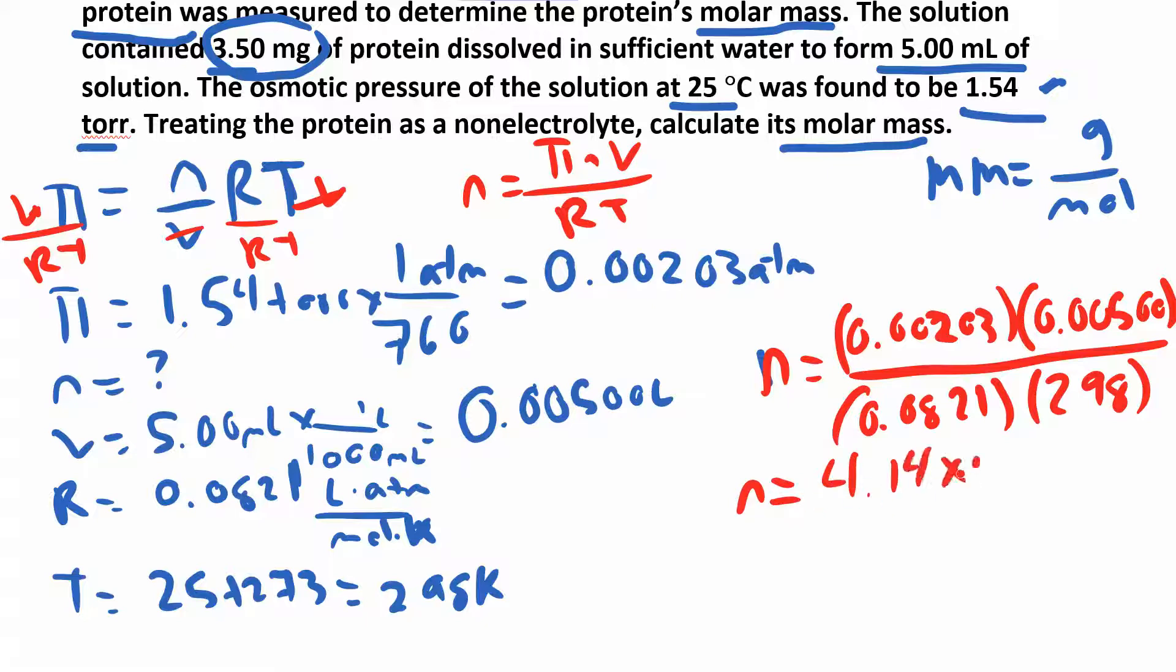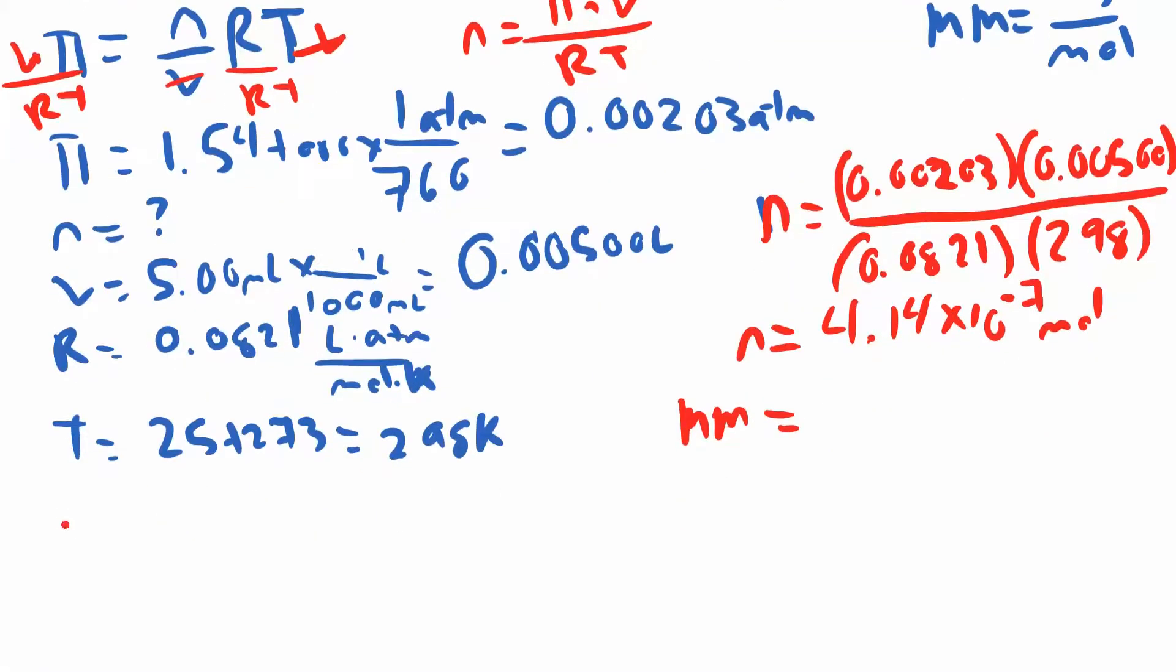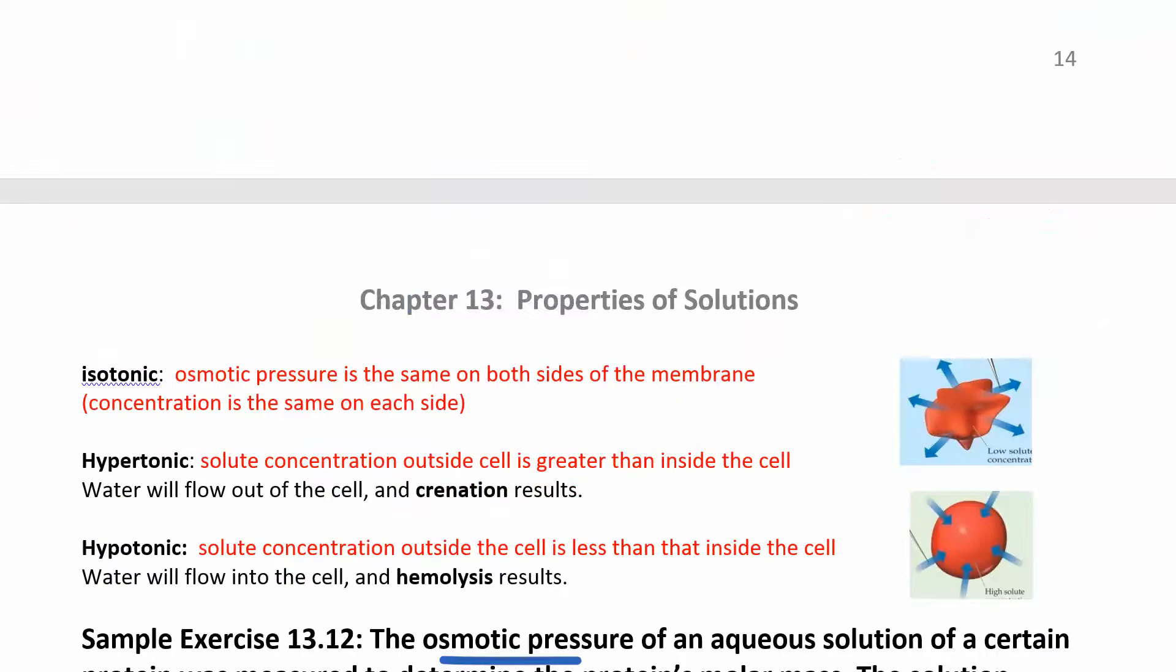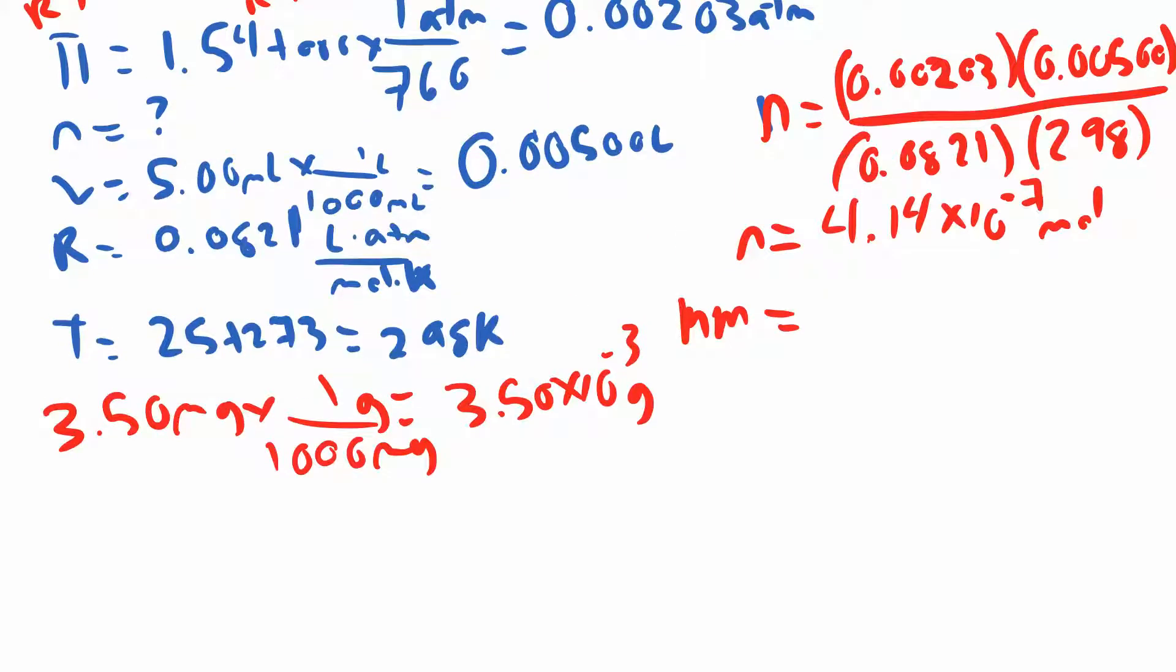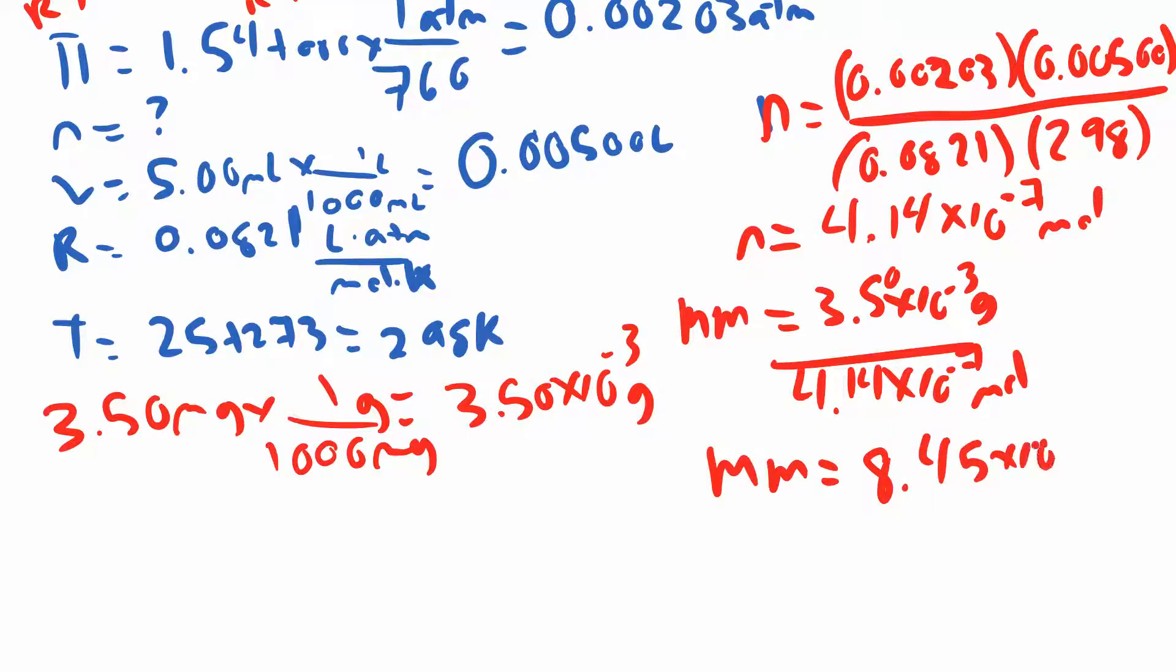I never converted those milligrams. 3.5 milligrams equals 3.50 times 10 to the negative 3 grams. Molar mass is grams over moles: (3.5 × 10⁻³ grams)/(4.14 × 10⁻⁷ moles). Your molar mass ends up being about 8.45 times 10³ grams per mole. That's pretty big—proteins can be pretty big.